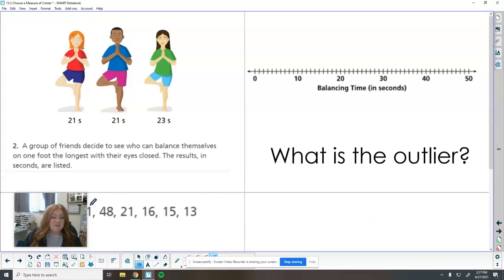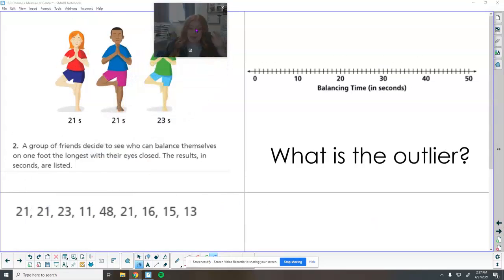This time a group of friends decided to see who could balance themselves the longest on one foot with their eyes closed. I forgot that part. The results are listed here. So first we want to make our dot plot.